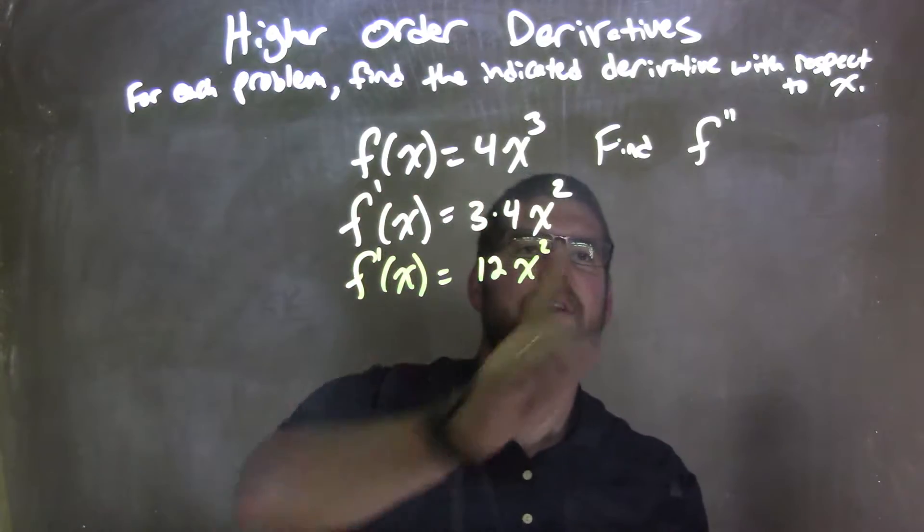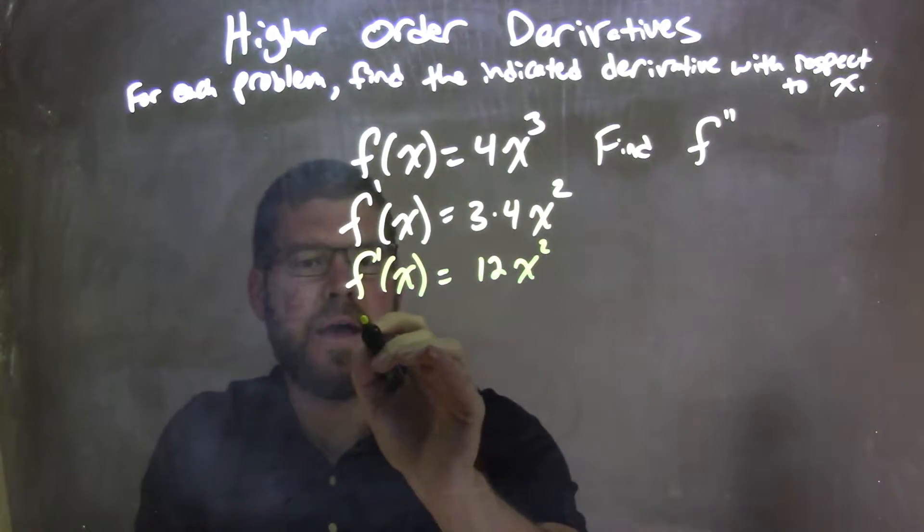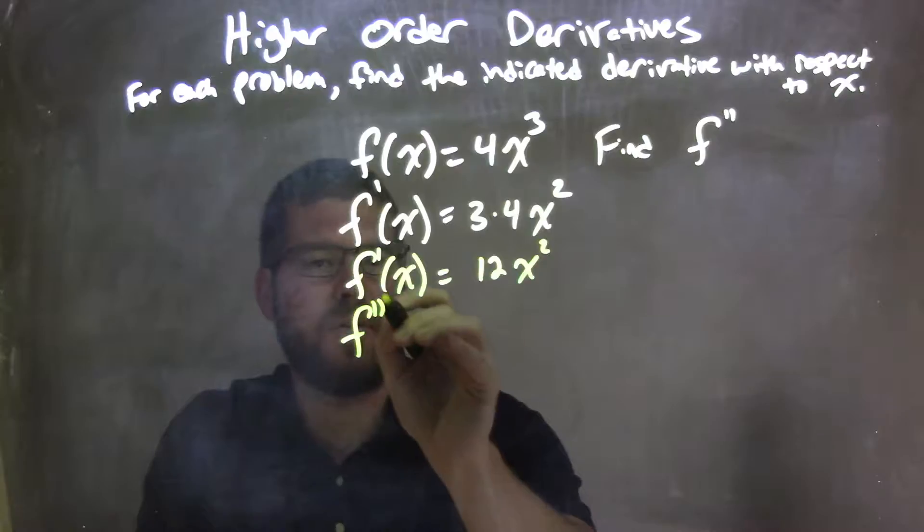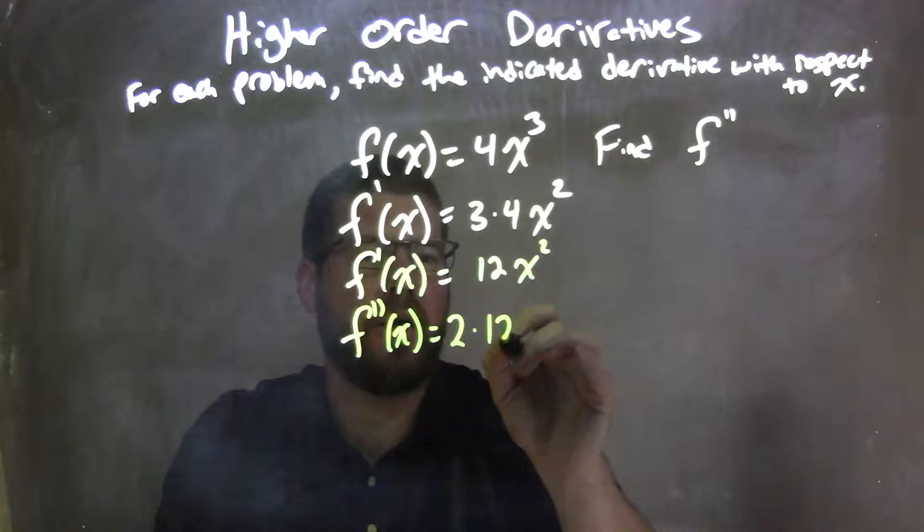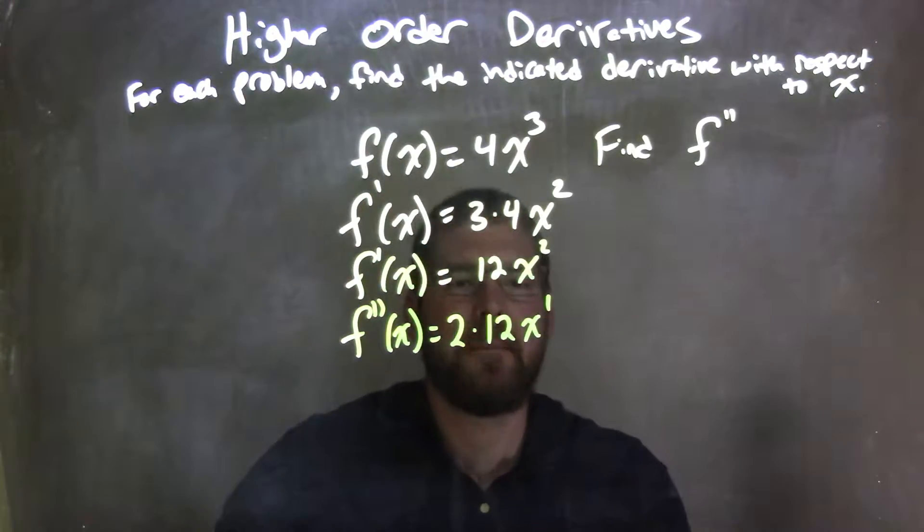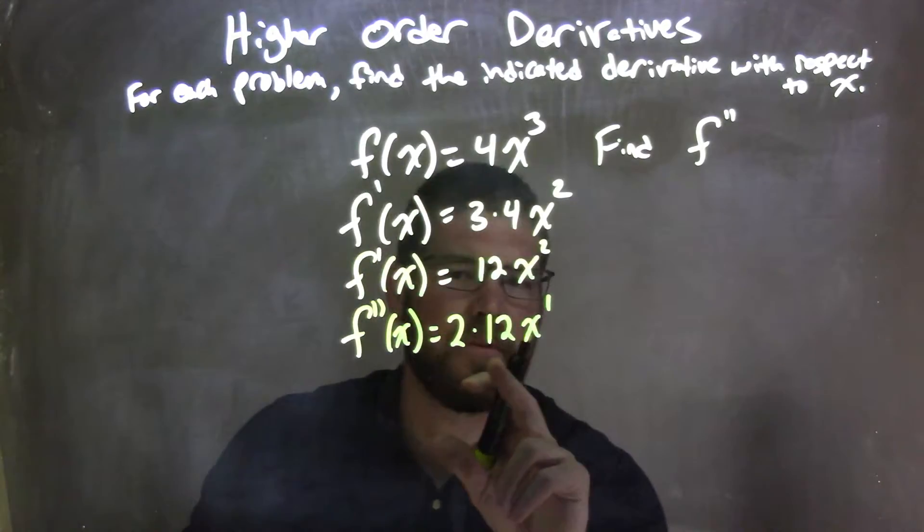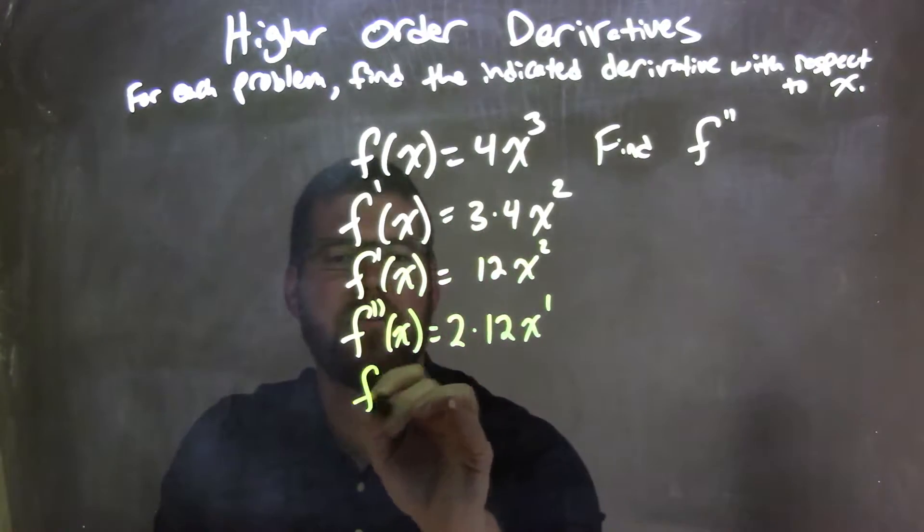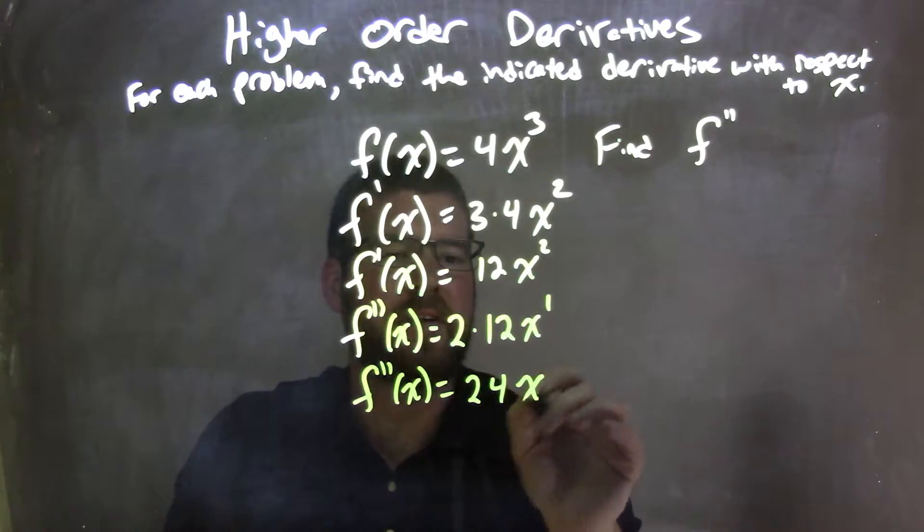Well, they asked us here now to find f double prime. So I need to find the second derivative now, the second derivative of x. And again, I'm using the power rule. The 2 comes down out front, times 12x exponent, because we subtract it by 1. So it's 2 minus 1 is 1. Now I'll multiply this out. Simplify 2 times 12 is 24. So f double prime of x is equal to 24x.